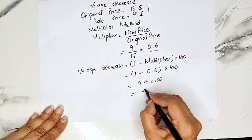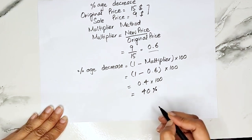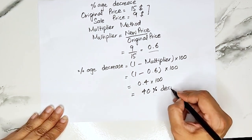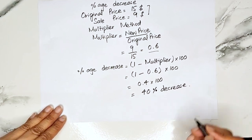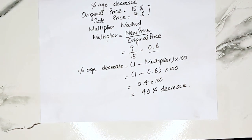That is 40% decrease. This is how you can calculate the percentage decrease using the multiplier method. I hope you liked this video — please subscribe to my channel, thank you.